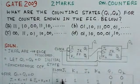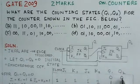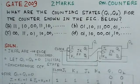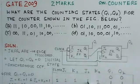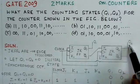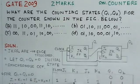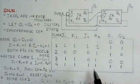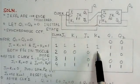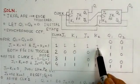We see the outputs Q1 and Q2 are both zero. Corresponding to Q1=0, Q2=0, we find the states of J1, K1 and J2, K2. If Q1 is zero, then Q1-bar is one, so J2=1 and K2=1. If Q2 is zero, then Q2-bar is one, so J1=1 and K1=1. Both flip-flops have J=1, K=1, meaning both are in toggle mode — they will change on the next clock pulse.